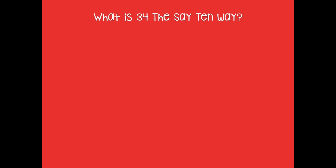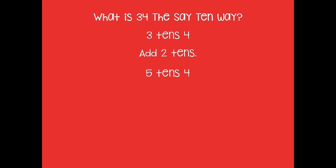All right friends, what is 34 the Say Ten Way? How would I say that? Three tens four. What about if we add two tens to that? Our ones are going to stay the same — we're just adding two tens. How would I say that the Say Ten Way? Five tens four. Good. Now add two more tens — what do we get? Seven tens four, so 74.